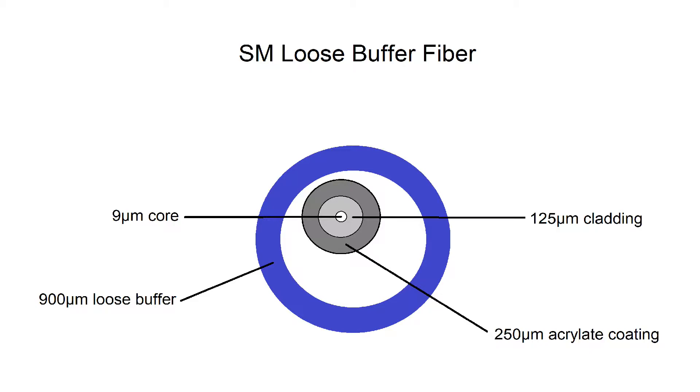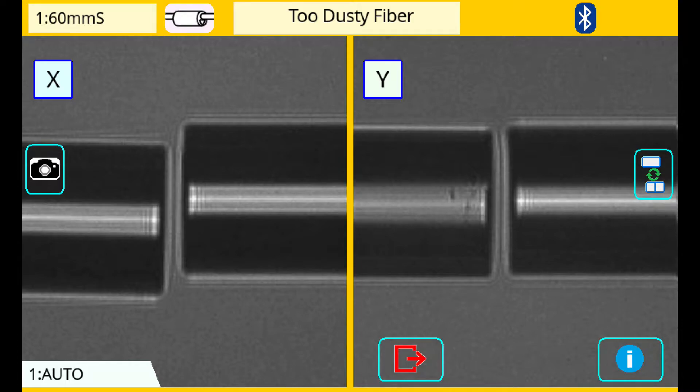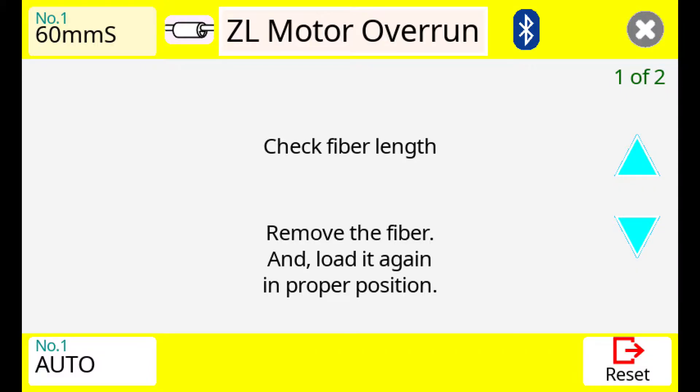If you're not aware that you're working with loose buffer fiber, your splicer might fail several times during the fiber positioning process with motor overrun or other error types shown here.